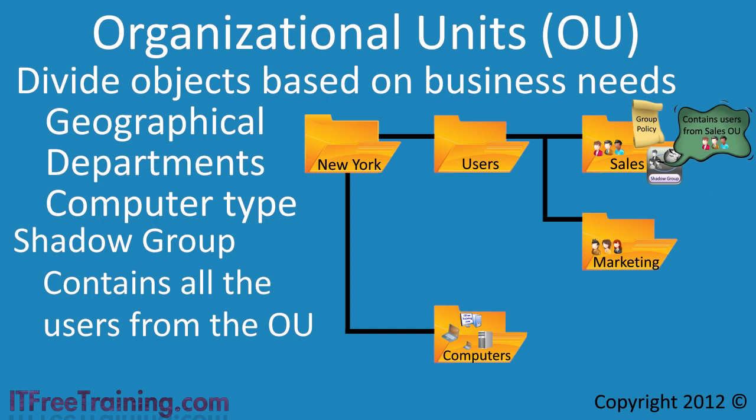Later in the course I will look at Fine Granular Password Policy. This allows different password policies to be applied to the domain. For example, a particular set of users could be configured to require a longer password than others. Fine Granular Password Policy must be configured using a Group. In this case you would more than likely want to configure it to an OU. For example, if you had a secure department, you would more than likely put all the users in this department in the same OU. This is a good example of where a Shadow Group would come in handy.